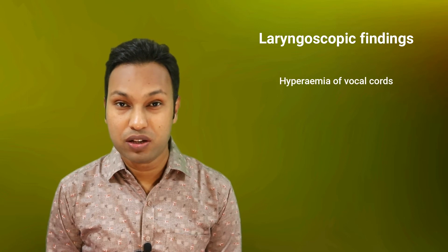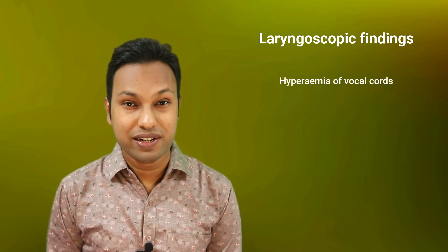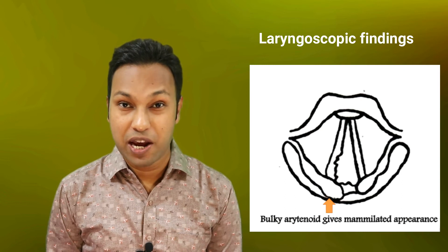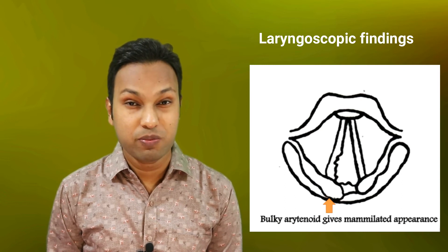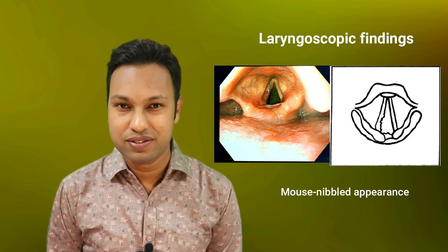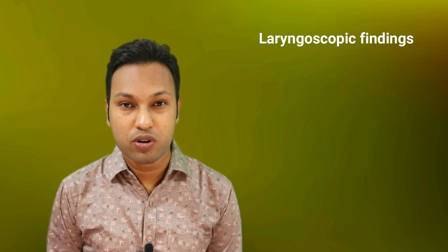The laryngoscopic findings in tuberculosis of the larynx include: hyperemia of the vocal cord; swelling of the interarytenoid region, which gives a mammillated appearance; ulceration of the vocal cord, which gives rise to a mouse-nibbled appearance; and superficial ragged ulceration over the arytenoid and interarytenoid region.